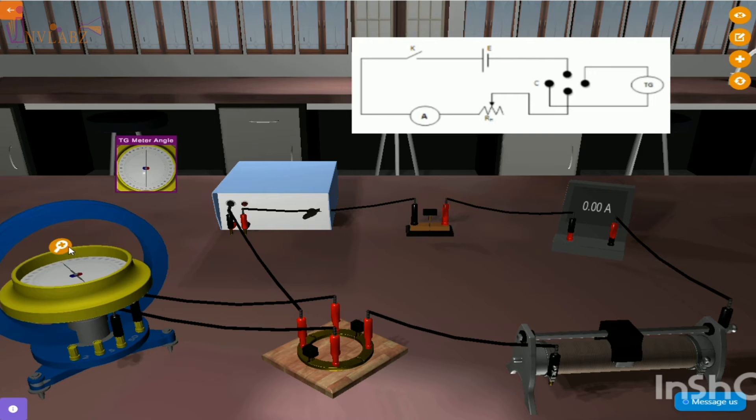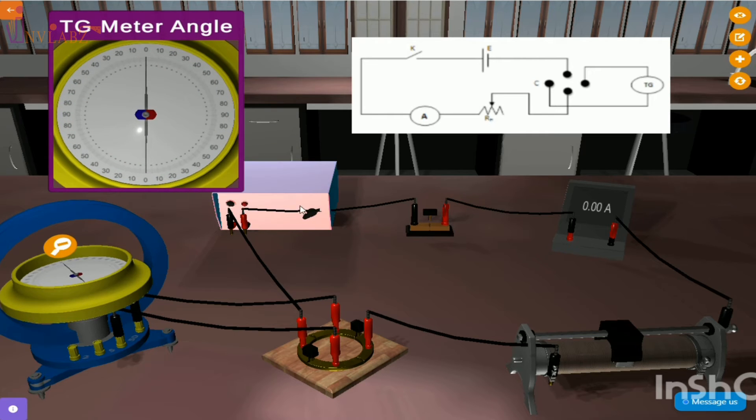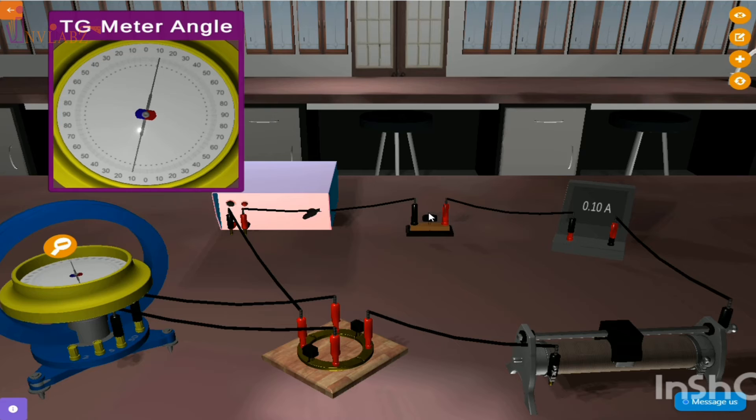To zoom on the tangent galvanometer apparatus, click on the zoom button. Now power on the battery and insert the key.